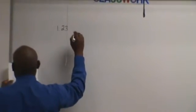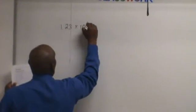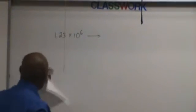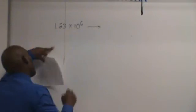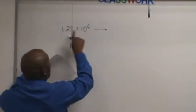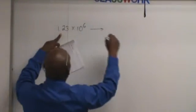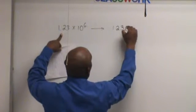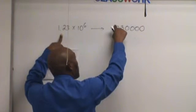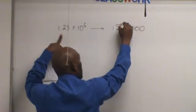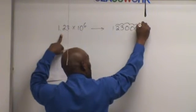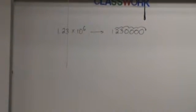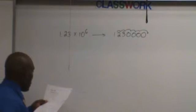1.23 times 10 to the 6. You want to write this — you want to expand this. In order to expand this, I need to go 6 places from where the decimal is. So: 1, 2, 3, then 0, 0, 0 — that's 6 places from here: 1, 2, 3, 4, 5, 6. So that's the expansion: 1,230,000.